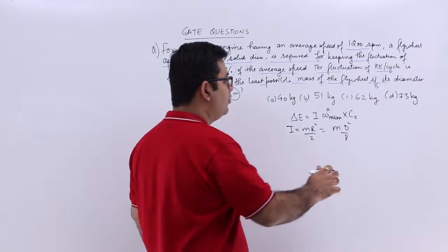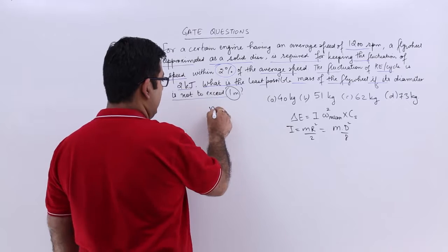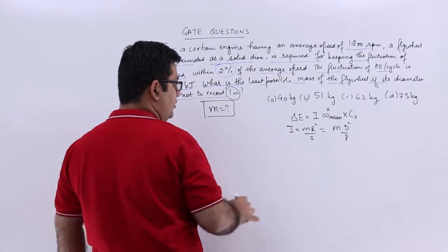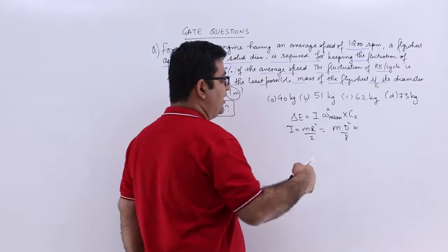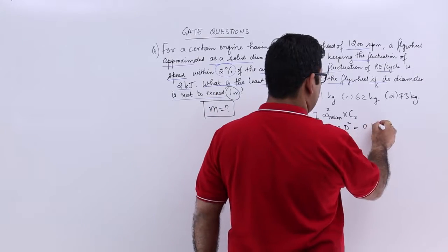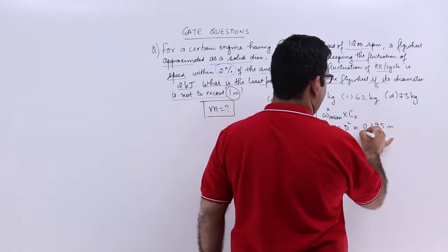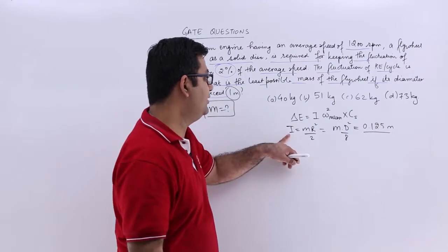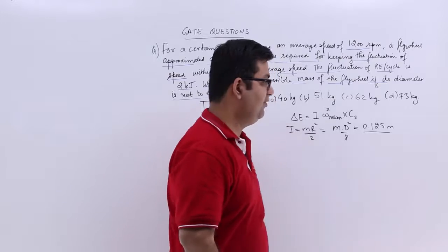So I need to calculate M. The question is to find out M. So you will get 1 by 8 which is 0.125 times M. So you have I in terms of M, 0.125 M.